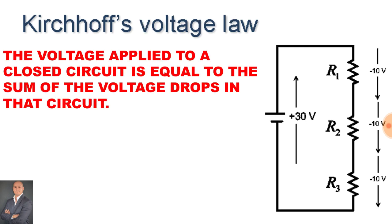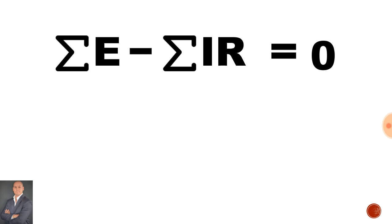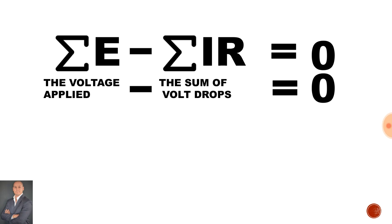Kirchhoff's voltage law states that the voltage applied to a closed circuit is equal to the sum of the volt drops in that circuit. In this illustration we have an applied voltage of 30 volts, which is equal to the sum of the volt drops across each resistor. Therefore, the applied voltage minus the sum of the volt drops is equal to zero.